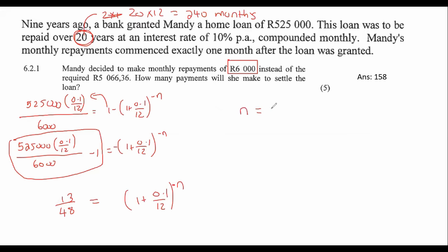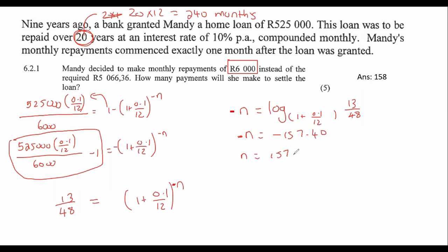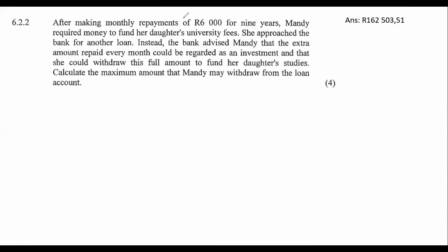So that would eventually give us N equals log base (1 plus 0.1 over 12) of 13 over 48. When you type that into your calculator, you get N equals 157.40. But the question asks how many payments — you can't make 157.4 payments. You're going to pay the bank 158 times, and the last payment will just be a little bit less. After making monthly payments of 6,000 Rand.